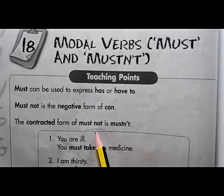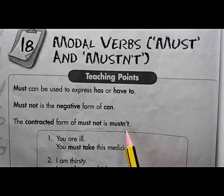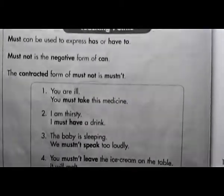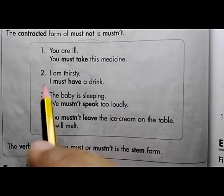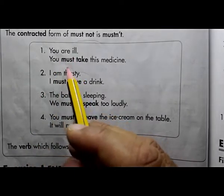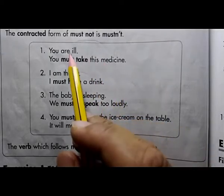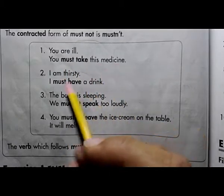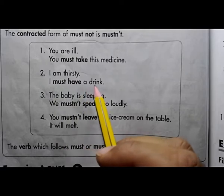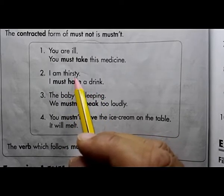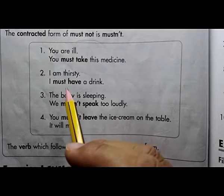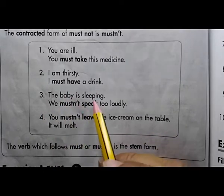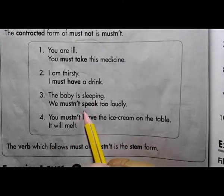Here we have some examples. You are ill — you must take this medicine. Because you are ill, you have no other choice, so we say: you must take this medicine. I'm thirsty — I must have a drink. Because you are thirsty, you have no choice except to drink something — it may be water, milk, or any juice.